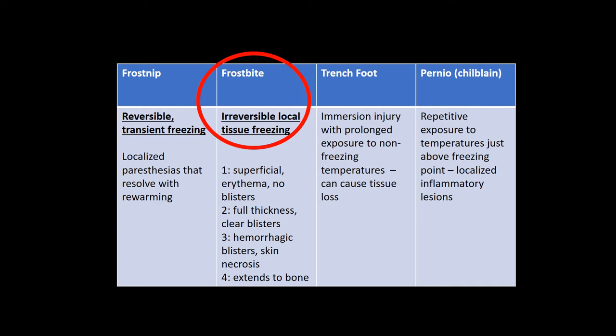Trench foot is an immersion injury with prolonged exposure to non-freezing temperatures and can cause tissue loss. Pernio is repetitive exposure to temperatures just above the freezing point, causing localized inflammatory lesions that are red and purple in color and very painful.